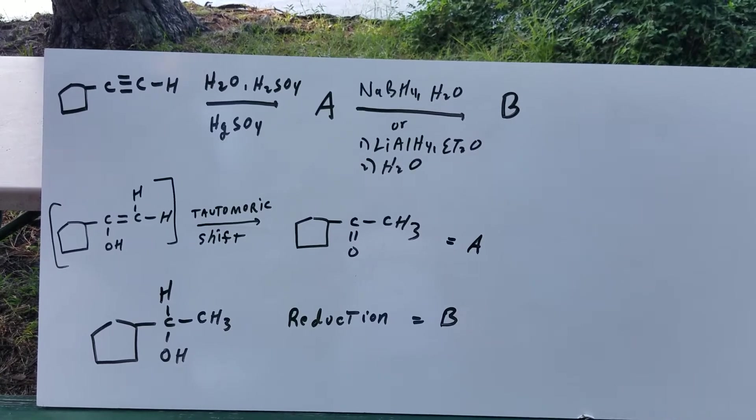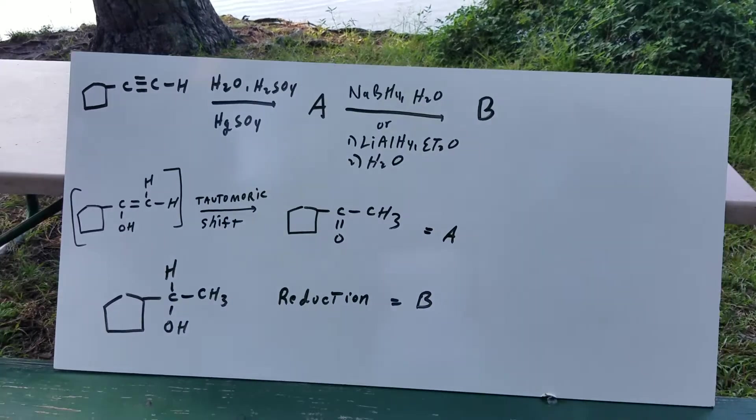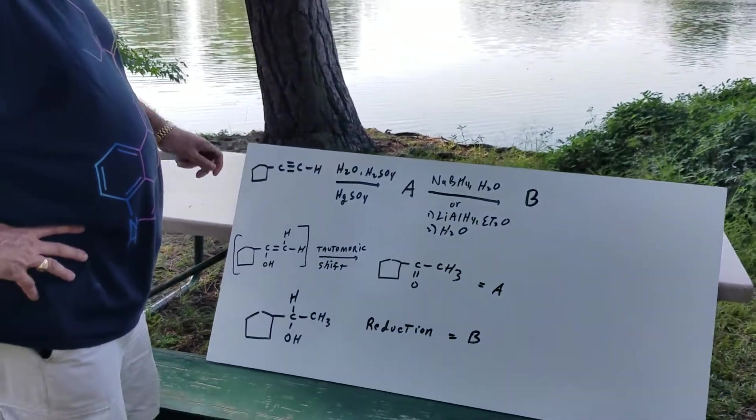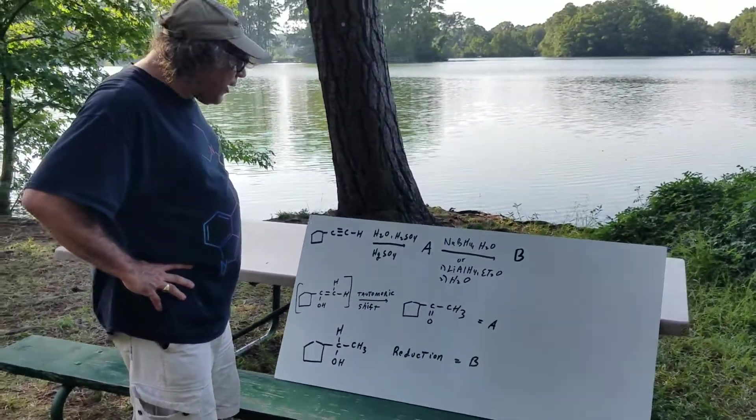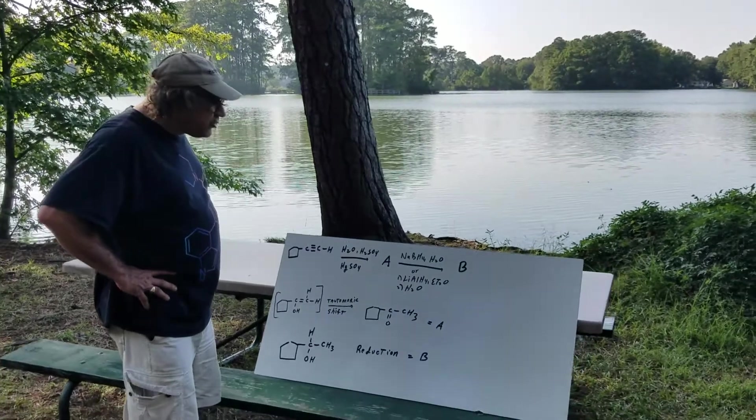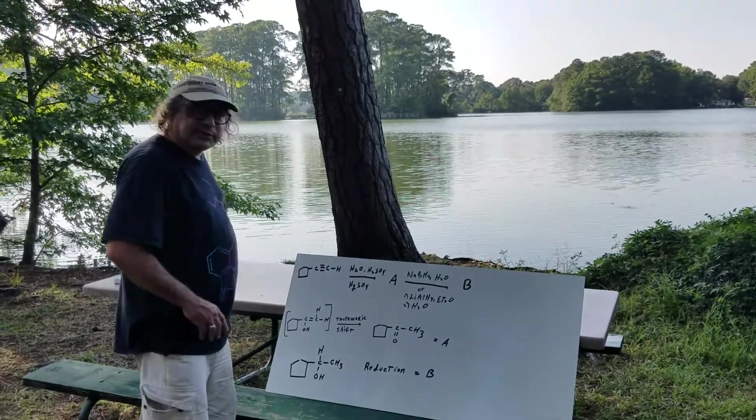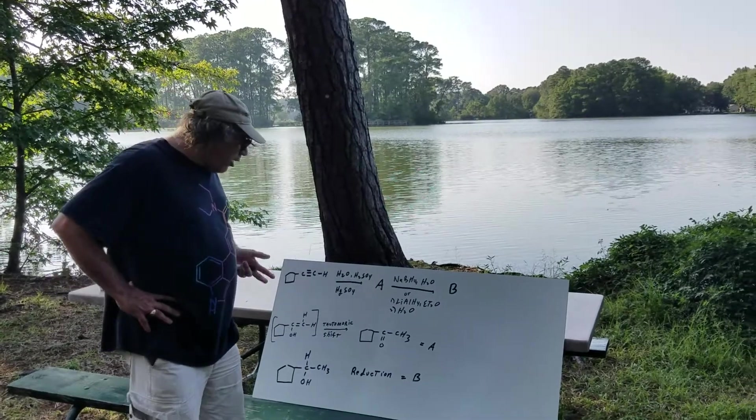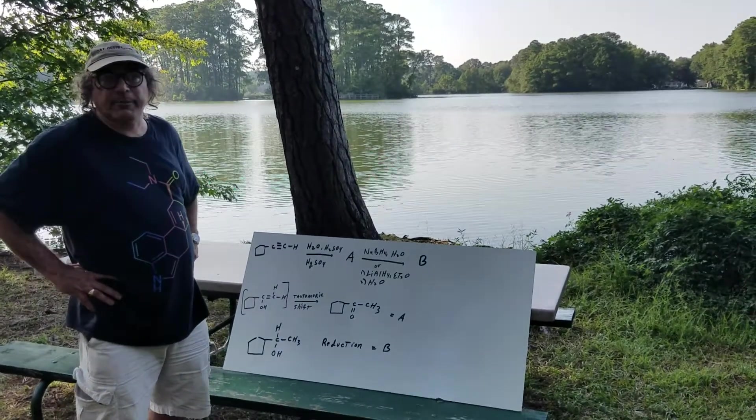So to recap what I've done: I've done two transformations - I've gone from an alkyne into a ketone, and then I reduced the ketone, as you can see, into the secondary alcohol. I hope that helps on the chemistry of the alkynes.